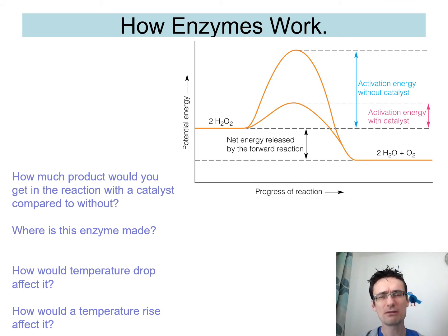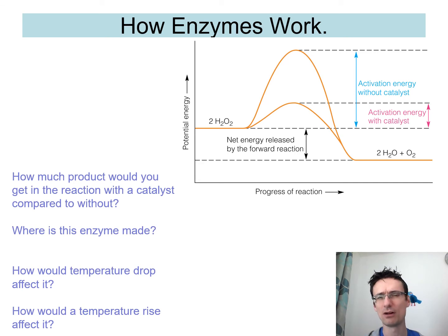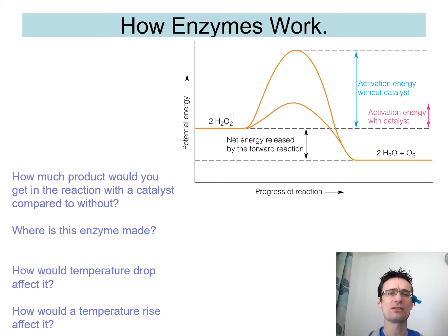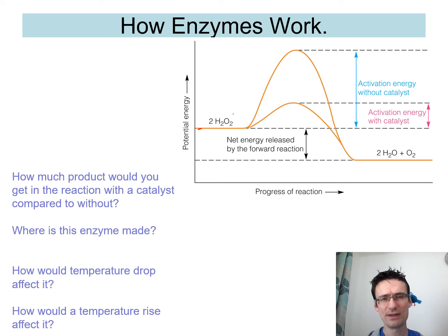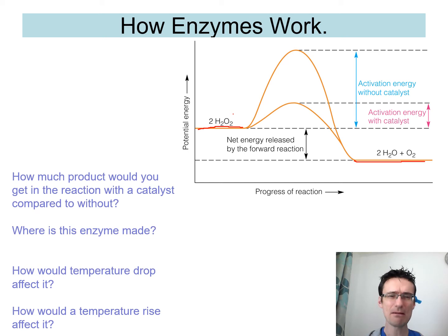So how do enzymes work? This graph shows something about hydrogen peroxide. We use something called catalase to break down hydrogen peroxide, which is a toxic byproduct made in many chemical reactions in our body. The graph shows how much product you get with a catalyst compared to without — you actually get the same amount of product. You start with the reactant and end up with oxygen and water, the same amount either way.